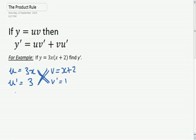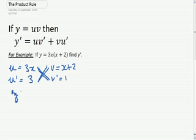So, y dash is going to equal, uv dash is simply 1, well, we don't really need that 1, but I'll put it down so you can see where everything's coming from, times 3x plus 3 times x plus 2. Bit of advice, I'll just put the shorter of the expressions out front.